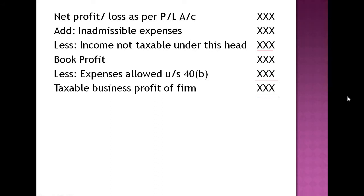To compute the business profit, first you take the net profit or loss as per the profit and loss account. Then you add the inadmissible expenses, then deduct the income not taxable under this head to get the book profit. From the book profit you deduct the expenses allowed under Section 40B to get the taxable business profit of the firm. Section 40B covers rules regarding payment of salary, commission, or remuneration to working partners and interest on capital to all partners, subject to the limits provided the remuneration is in accordance with the partnership deed.